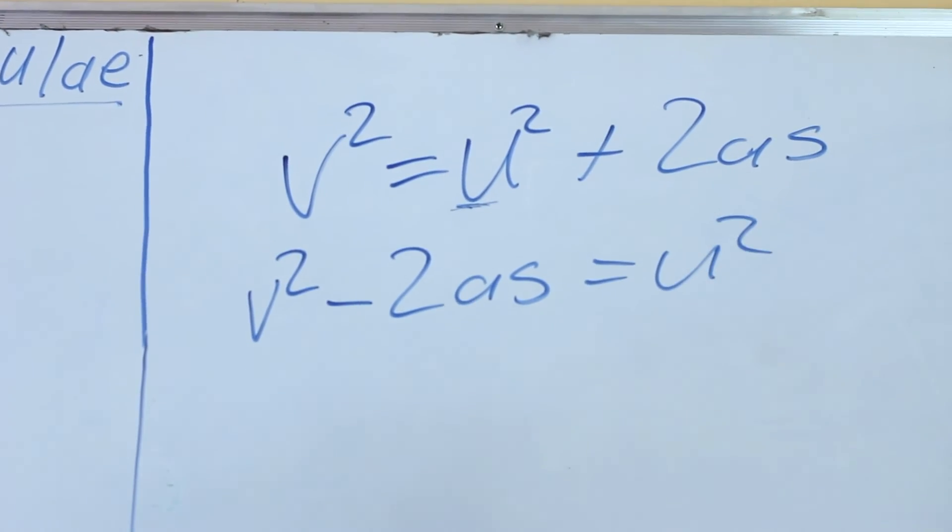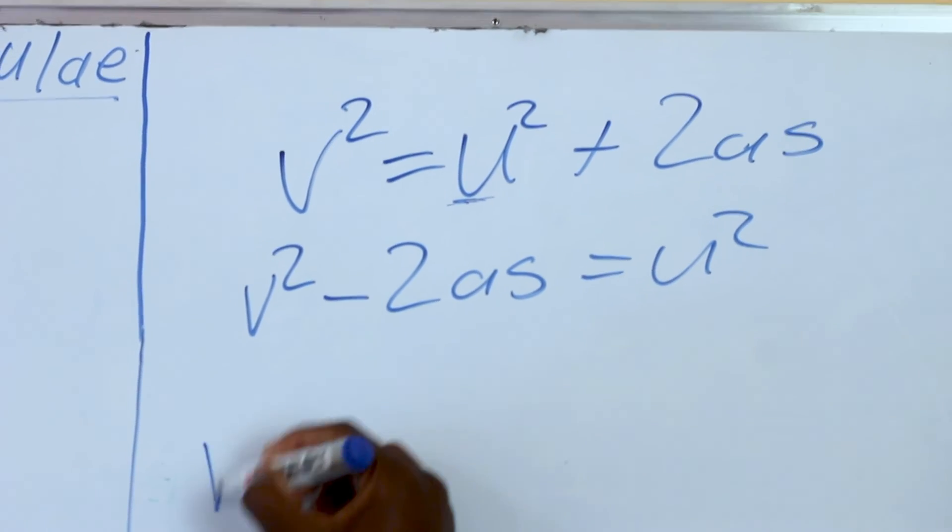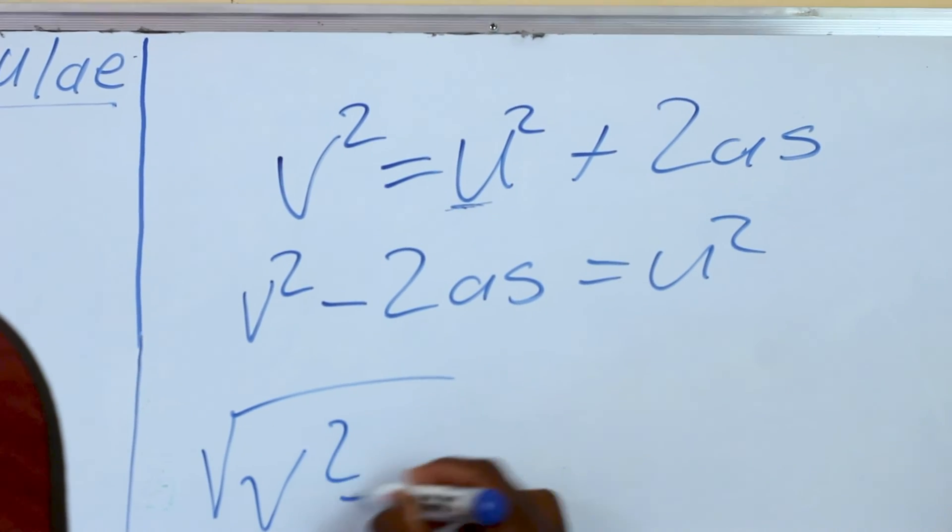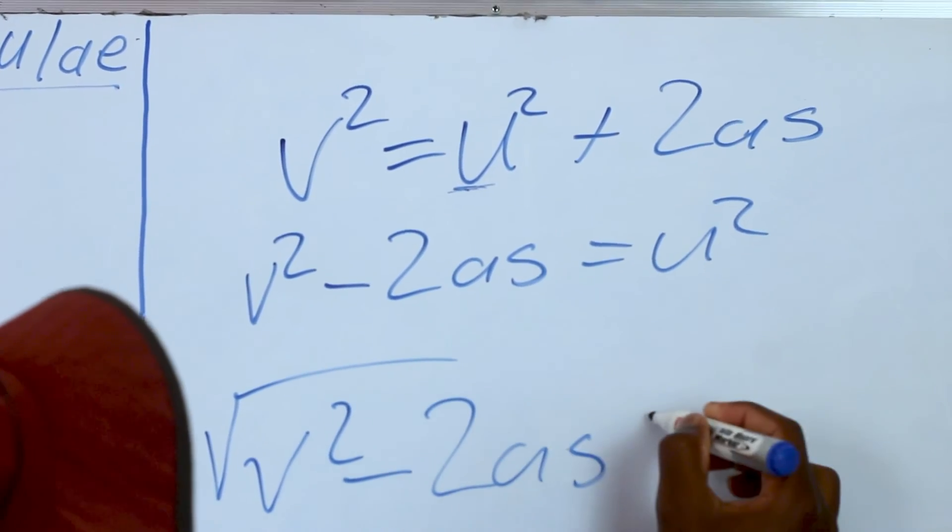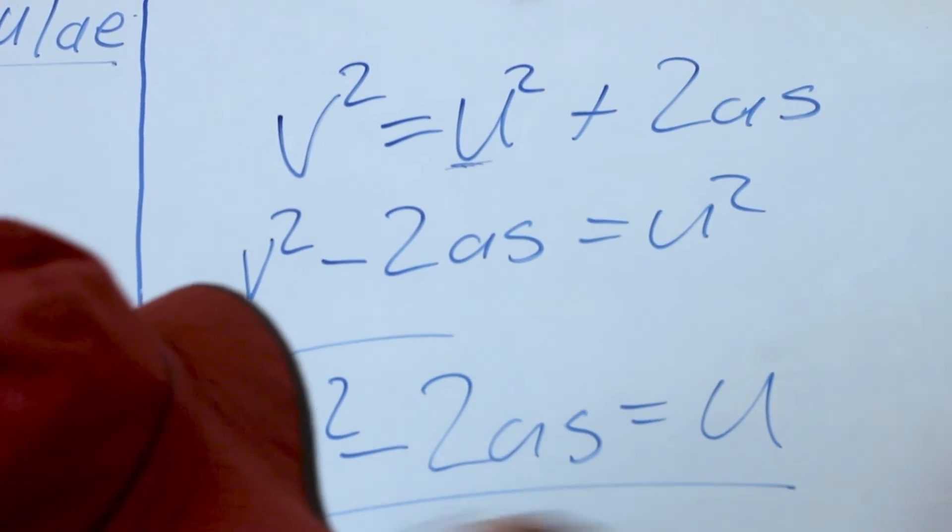We want to remove this square root, so we say square root of V squared minus 2as equals U. And this is our final answer.